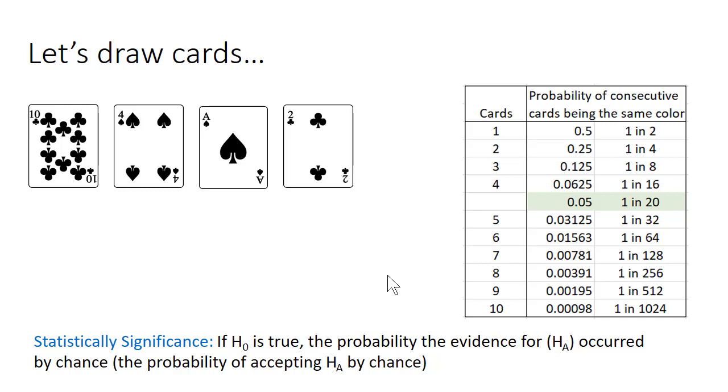But if we draw the fourth card, and that's also a consecutive black, then most people will start thinking the evidence is starting to pile up that this is not a randomly distributed deck of cards.